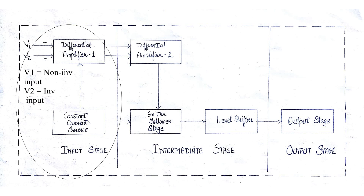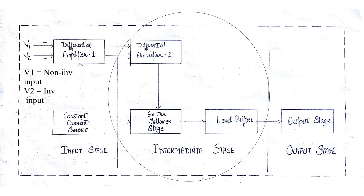The two inputs to the differential amplifier are: V1, which is the non-inverting input, and V2, which is the inverting input. The intermediate stage is the second stage, designed to achieve better voltage and current gain. The current gain is required to supply sufficient current to drive the output stage, where most of the op amp power is generated. This stage consists of one or more differential amplifiers followed by an emitter follower and a DC level shifting stage.